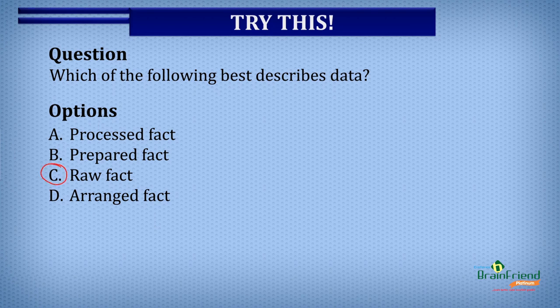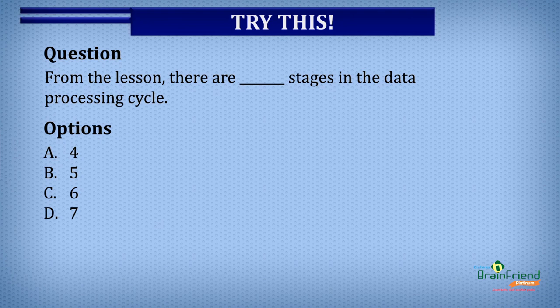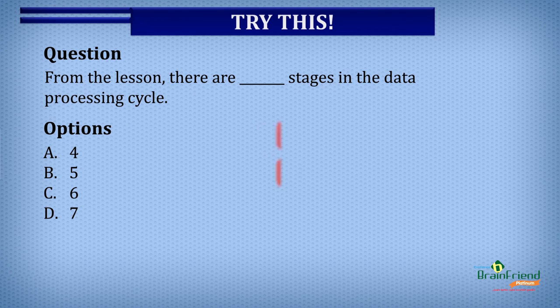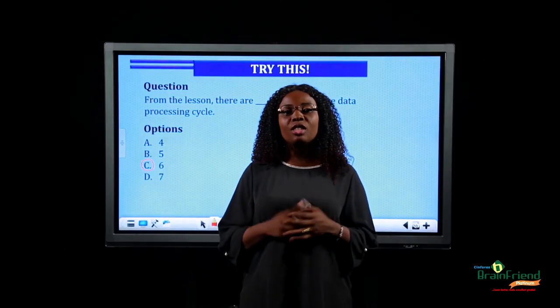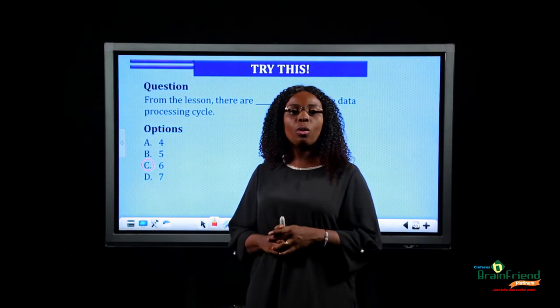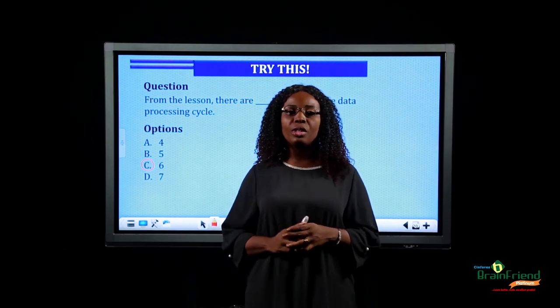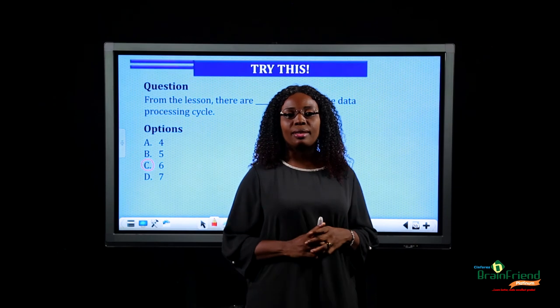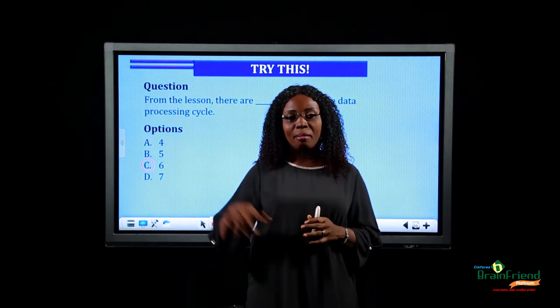Let's try out one more. From the lesson, there are how many stages in the data processing cycle? A. Four. B. Five. C. Six. D. Seven. The correct answer is C — six stages. With what you've learned so far, I believe you now know what data processing is and why the computer is an excellent tool for data processing. Till we meet in our next lesson. Bye-bye.